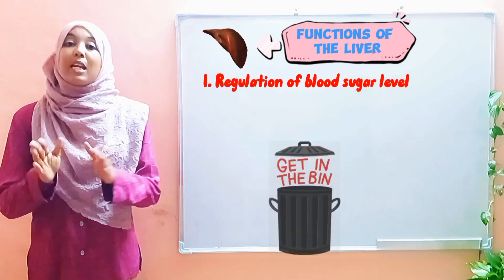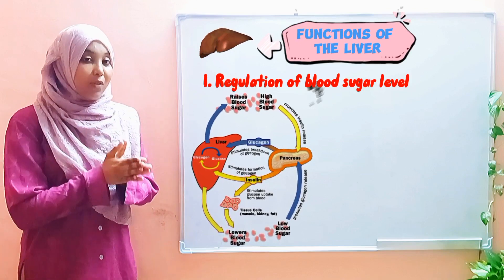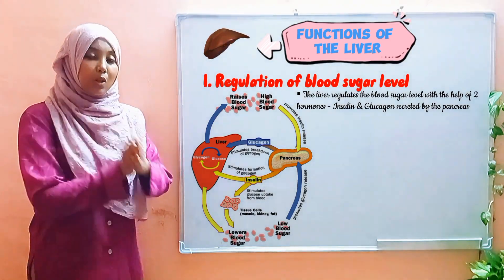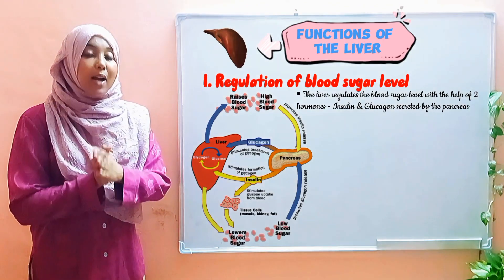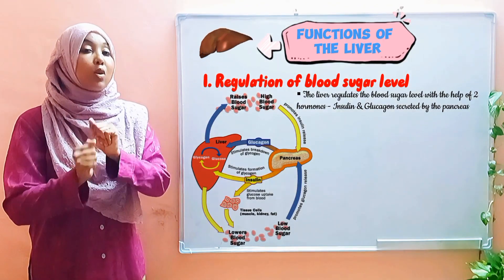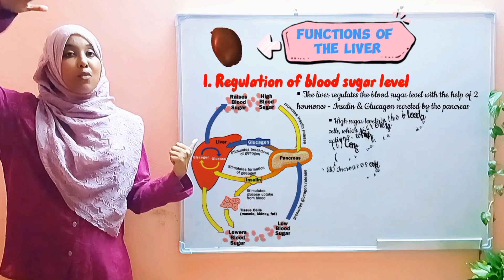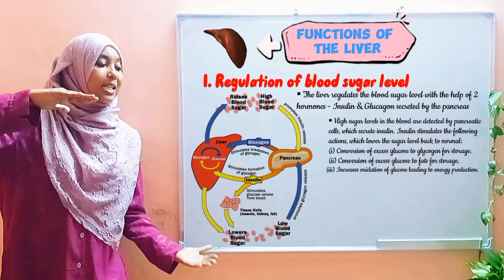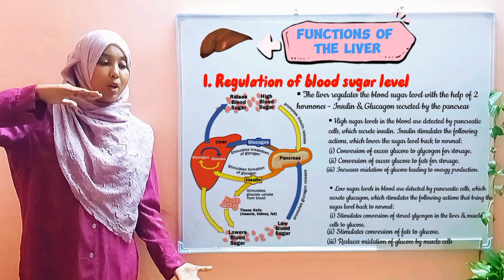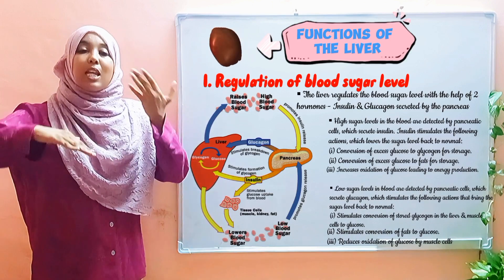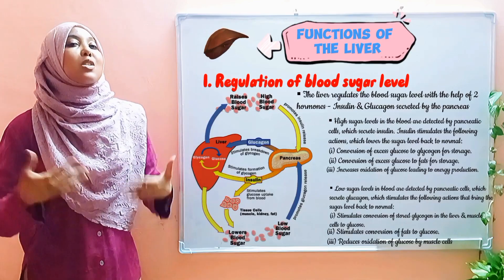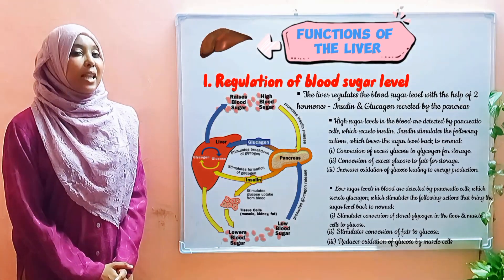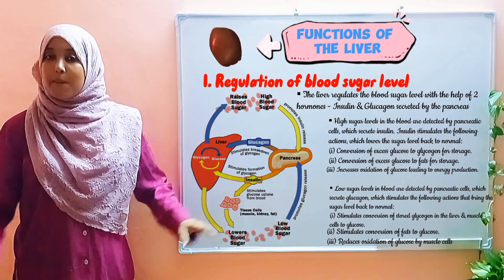Let's recap. The level of sugar in our blood is controlled by the liver together with the pancreas. The pancreas secretes two hormones — insulin and glucagon — which work in opposite ways and are therefore said to be antagonistic to one another. Insulin is secreted when blood sugar levels are high and brings them back to normal. Glucagon is secreted when blood sugar levels are low and brings them back to normal. That is regulation of blood sugar levels by the liver.